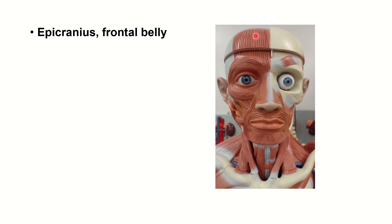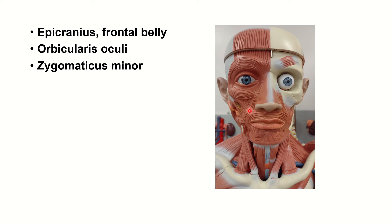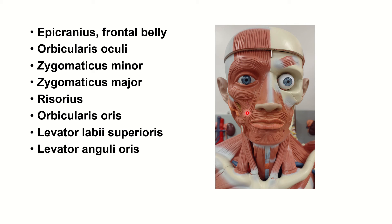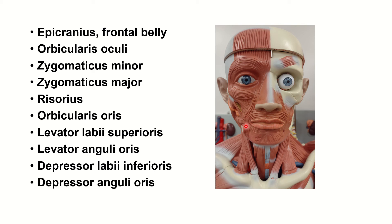Different models but similar muscles — same idea. Epicranius: this side is more superficial and these are the deeper muscles. This is the frontal muscle, or frontalis occipitalis frontal belly. Orbicularis oculi, zygomatic minor, zygomatic major, risorius, orbicularis oris. Around it you have levator labii superioris, levator anguli oris, depressor labii inferioris, depressor anguli oris, and finally mentalis.